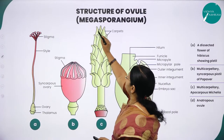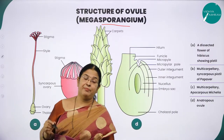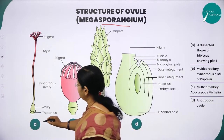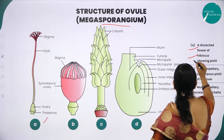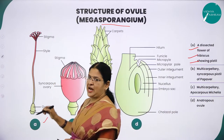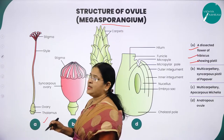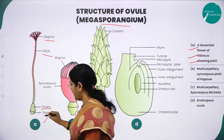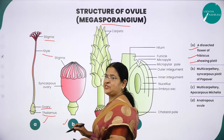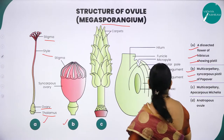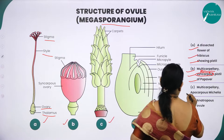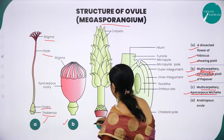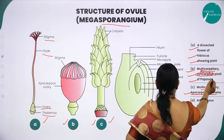Now moving on to the structure of megasporangium. Just as the pollen grain was called microsporangium and the anther was called microsporangium, here the ovule is called the megasporangium. Here you can see a picture of a typical dissected flower of hibiscus showing the pistil. Hibiscus is a bisexual flower, and the gynoecium consists of three parts: stigma, style, and ovary. This is the thalamus which holds the other organs of the flower.